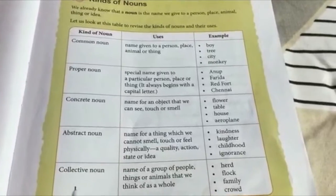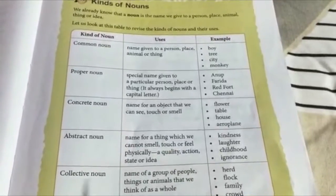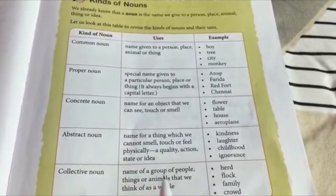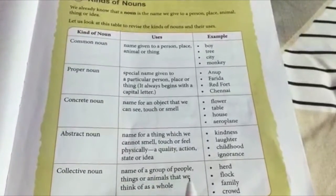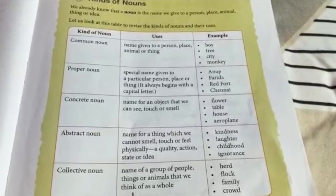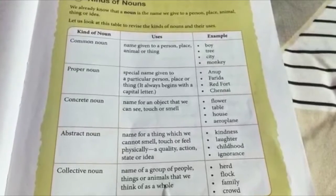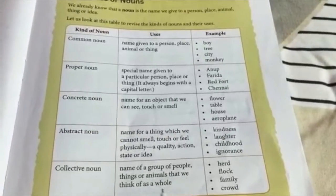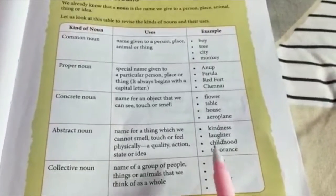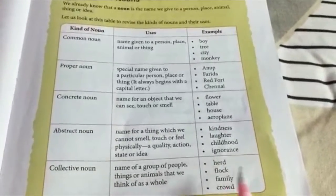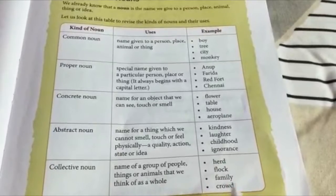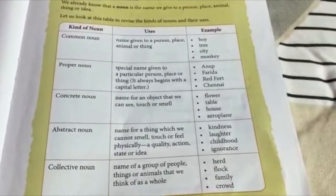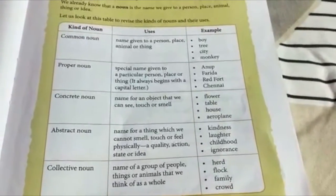Collective noun. A collective noun is the name of a group of people, things or animals that we think of as a whole. Examples include: herd, flock, family, crowd. Thank you.